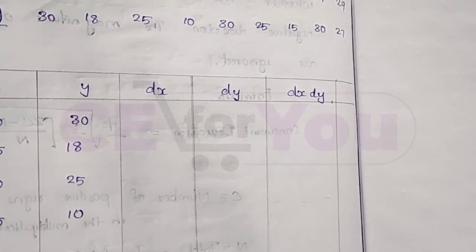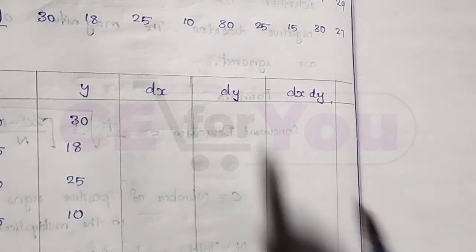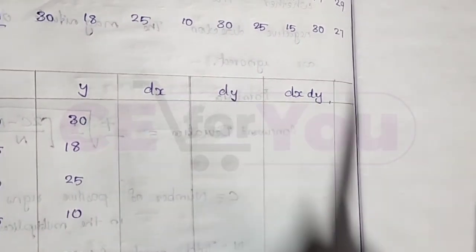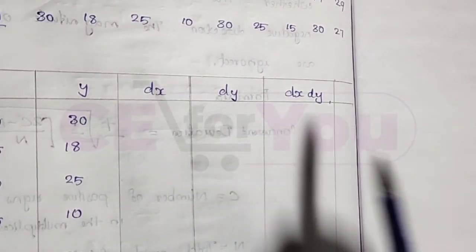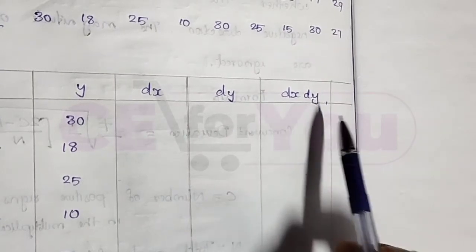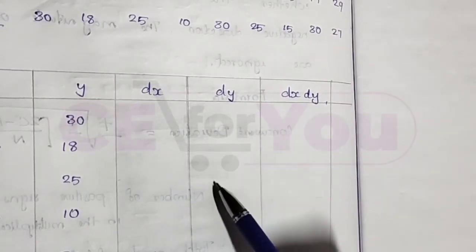We will set up the table. We apply the formula (2c minus n) divided by n. We will add columns for dx and dy.